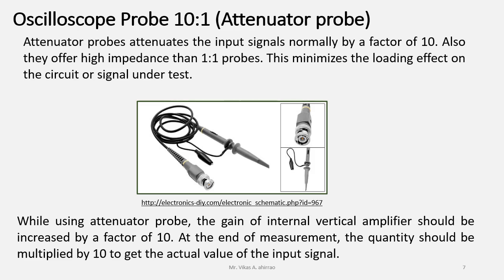While using the attenuator probe, the gain of the internal vertical amplifier should be increased by a factor of 10 because as the name indicates 10:1. It means, for example, when we are going to give 10 volts at the input then it will be only 1 volt at the output side. At the end of measurement, the quantity should be multiplied by 10 to get the actual value of the input signal.